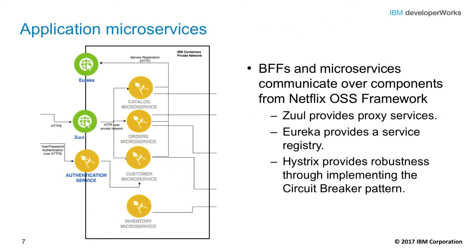Reusable Java microservices are invoked by the BFFs. This component is sometimes written by a team different from the front-end developers. In the reference implementation, the microservices are written in Java using Spring Boot and run inside IBM containers using Docker. BFFs and Java microservices communicate with each other using the Netflix OSS framework components. The Zuul Netflix component runs in Bluemix to provide a proxy layer for the microservices. The Eureka component provides a service registry — Java microservices register themselves to Eureka, which allows clients to find them. Hystrix provides an implementation of the circuit breaker pattern, running as a library inside the Java applications and forwarding service availability information to a dashboard.